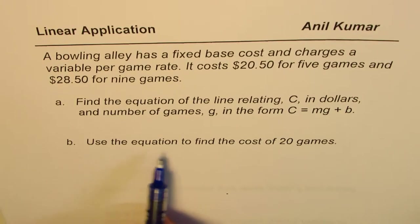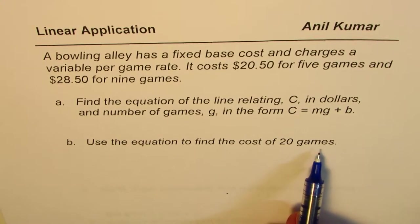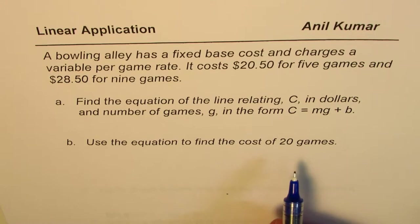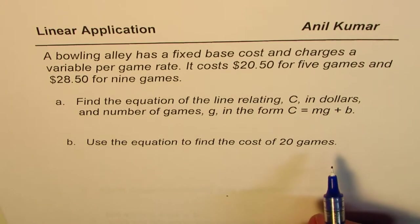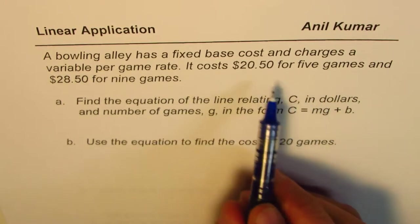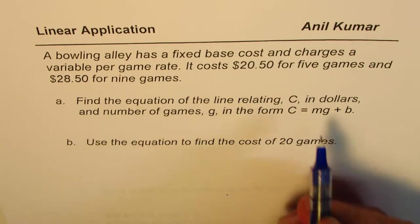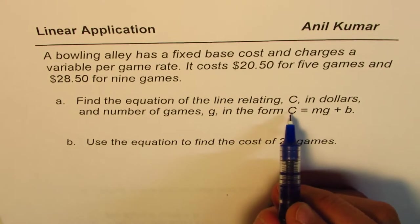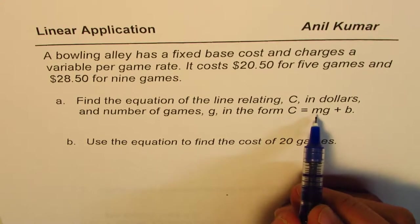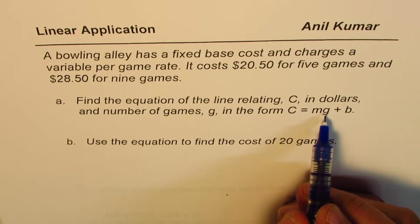Part B is: use the equation to find the cost of 20 games. Whenever you are given this kind of scenario, we can convert these into coordinate points. So, looking into the equation, when we say C is the cost, m is the rate of change, and g is number of games.